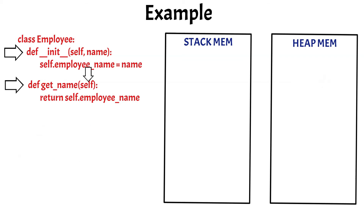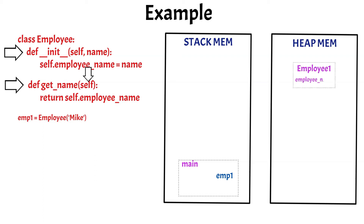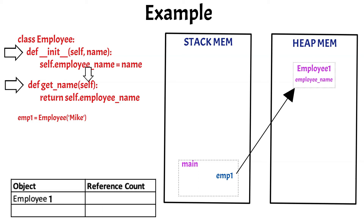For example, if we create an object for the employee class, we can write: emp1 = Employee('Mike'). This will create the emp1 variable in the main stack, and it will be pointed to the employee object in the heap memory. If you remember from the last video, we learnt about the object reference counting table, which keeps track of each object and the number of references it has. So in this case, the employee object 1 will have the value of 1 as the number of references.